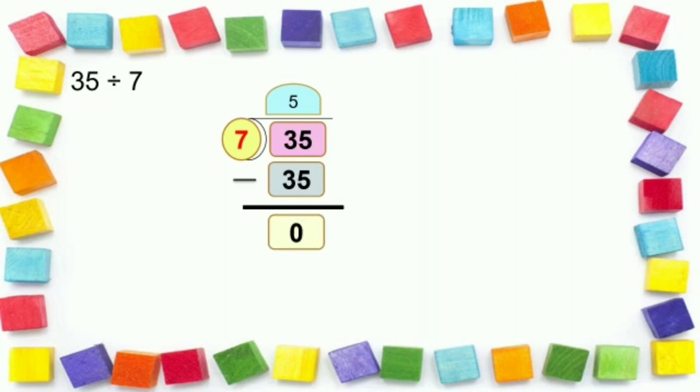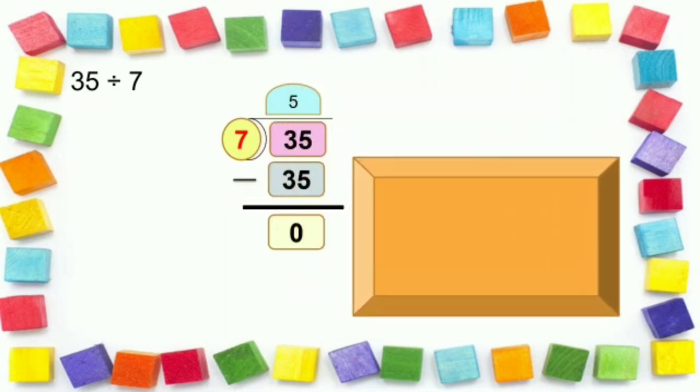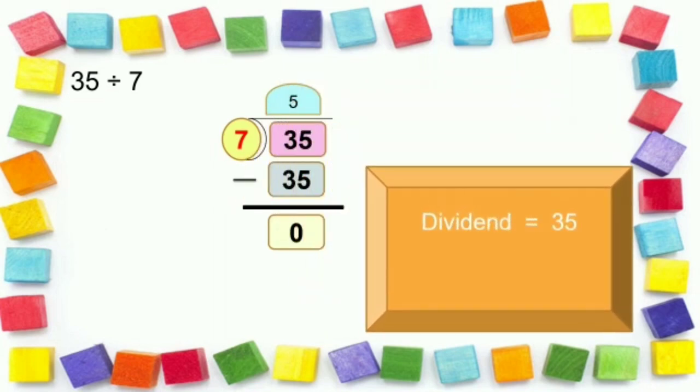So we write it here. Now we can summarize it as: dividend here is 35, divisor is equal to 7, quotient is equal to 5.